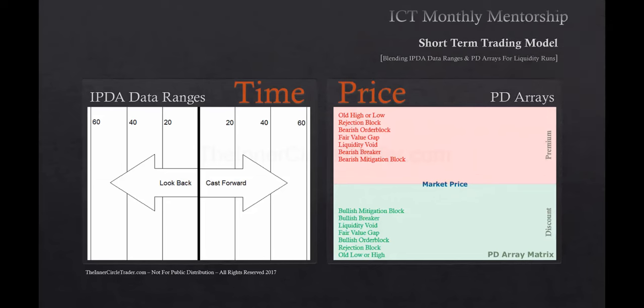When we're looking at IPTA data ranges, we're referring specifically to time, and PD arrays are dealing specifically with price. So blending the two elements together, you're blending time and price theoretically. IPTA data ranges provide you a context to look back the last 20 days, the last 40 days, and the last 60 days.